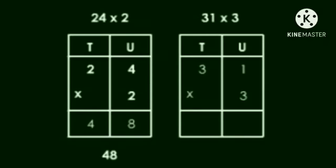Next, 31 into 3. Again, make the columns and write the numbers. First, start the multiplication from the units place.